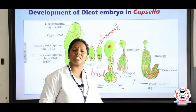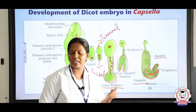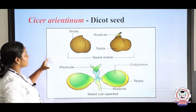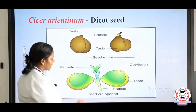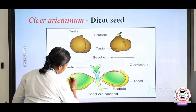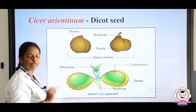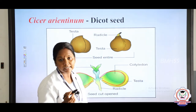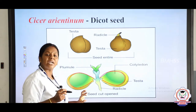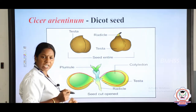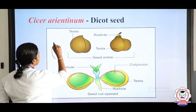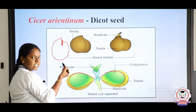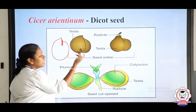Now let us see the example for the dicot seed: Cicer arietinum, which we call chana dal. It is a dicot seed consisting of two cotyledons. The two cotyledons are attached to the fruit wall by the structure called funiculus. The funiculus of the ovule becomes the funicle of the seed, as we studied in post-fertilization changes. When you open the chana dal you can see a white portion connecting the seed — that is the funiculus.